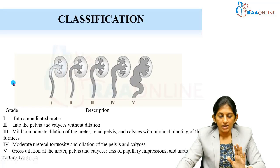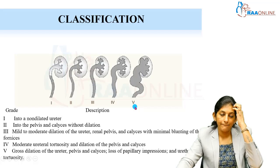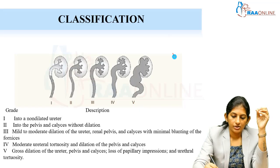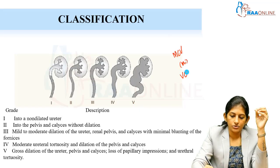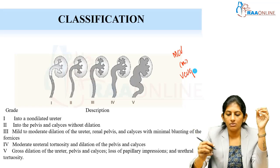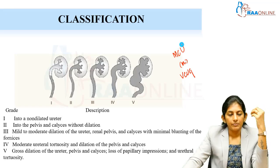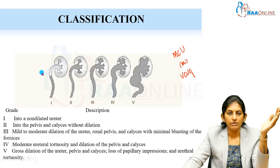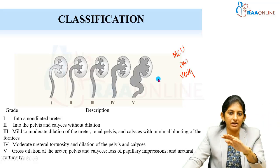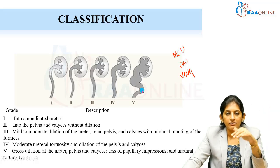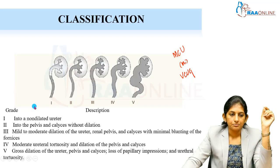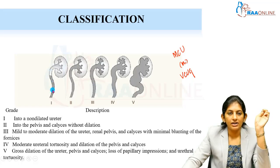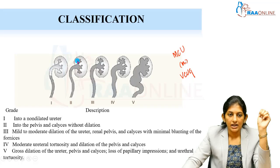The classification of VUR from Grade 1 to Grade 5 is based on the image obtained from the MCU — micturating cystourethrogram — also called a voiding cystourethrogram or VCUG. With MCU or VCUG, we classify VUR by grade. Grade 1 is the mildest: reflux only into the ureter, which is non-dilated. Grade 2 is reflux completely into the ureter, pelvis, and calyces, but with no dilatation.